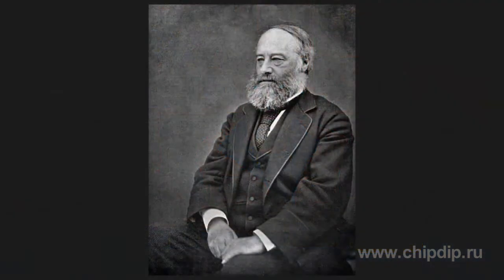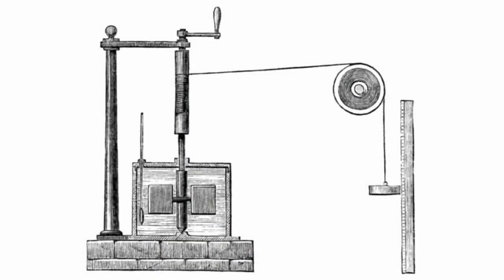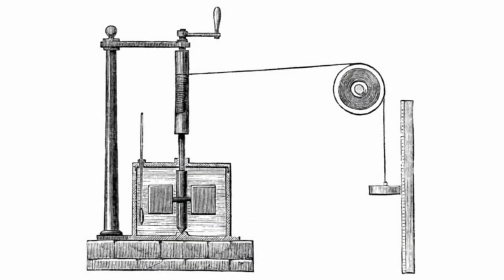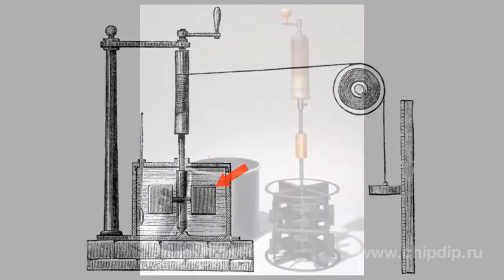An aggregate demonstrating the direct relation of them was built by James Prescott Joule in 1843. The aggregate includes three main parts: a body with a driving handle, a load block wired to a driving handle shaft, and a rotor installed on a shaft axis and located in water.